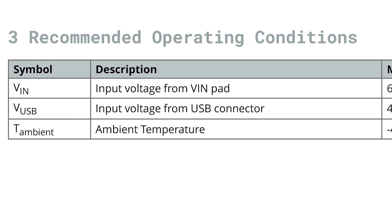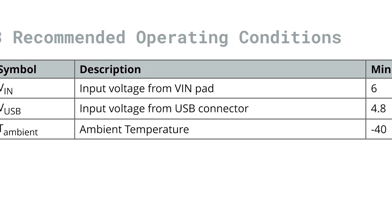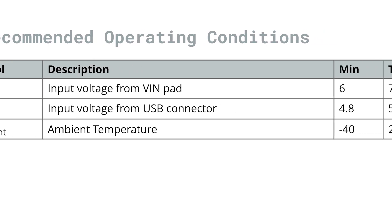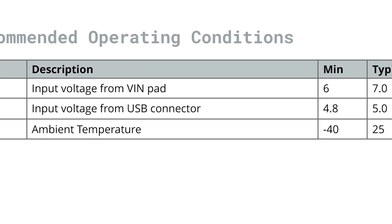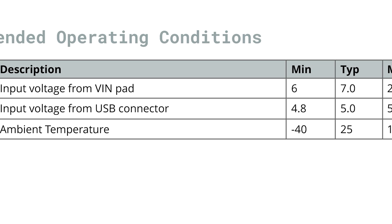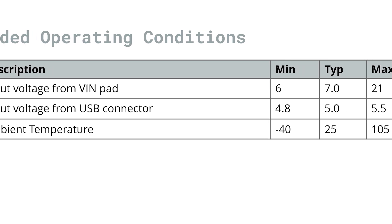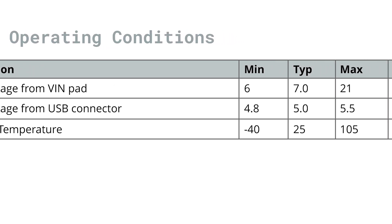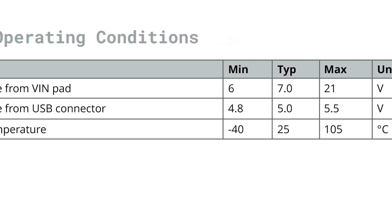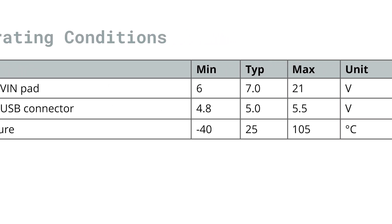Right next to, or sometimes right below, the absolute maximum ratings, you'll find the recommended operating conditions. These are the sweet spots where your component is designed to perform reliably. This section usually includes things like the supply voltage range, input signal levels, and operating temperature. When you're designing a circuit, these are the numbers you want to stick to in order to get your component to behave reliably and how you expect.